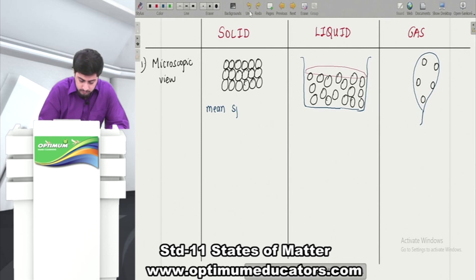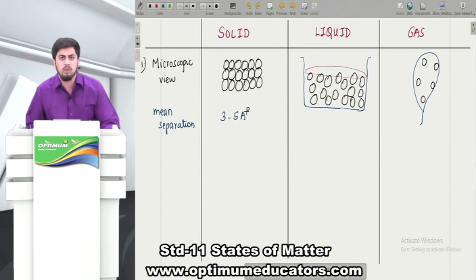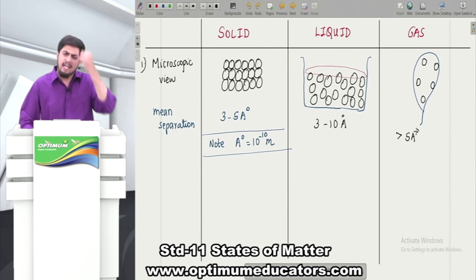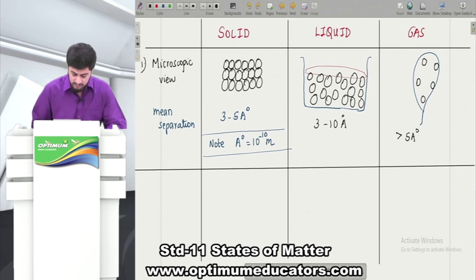This is the difference between solid, liquid, and gas. If I talk about mean separation here - let's write mean separation. Mean separation in solid is very close, it is about 3 to 5 Armstrong. What is Armstrong? Armstrong is 10 to the power minus 10 meters. Here mean separation is 3 to 5. Here the separation is more, so mean separation is roughly 3 to 10 Armstrong. Similarly, if you talk about gas, particles are very far, it is definitely more than 5 Armstrong. So here they are very close, here they are moderate, here particles are very far from each other.